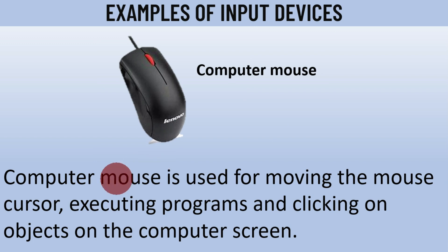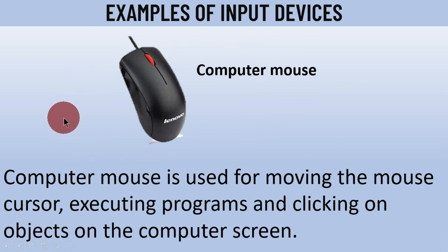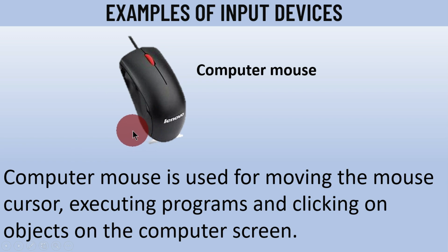The next example is the computer mouse, which is a main part of the computer system along with the keyboard, system unit, and monitor. The computer mouse is used for moving the mouse cursor, executing programs, and clicking on objects on the computer screen. As you can see, I am moving my mouse on this interface and the cursor is moving as well. You can right-click on programs to execute a function. When you have an icon like the recycle bin on your desktop, you can click to select or double-click to open it.